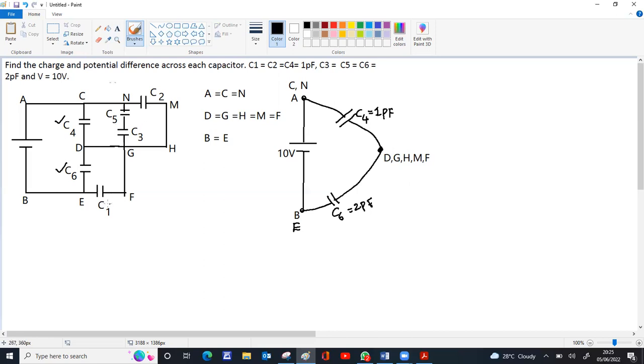Now C1 is between E and F. E is here, F is here. So it will be connected between E and F. C1 is 1 picofarad. So C1 is taken.